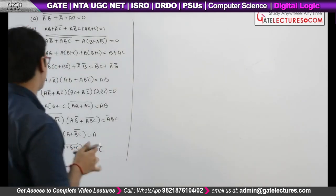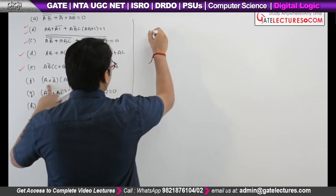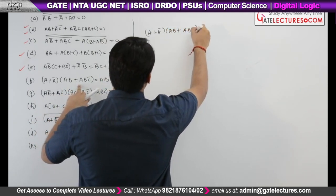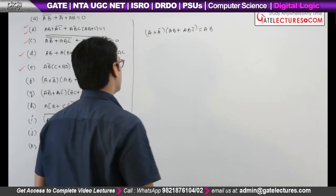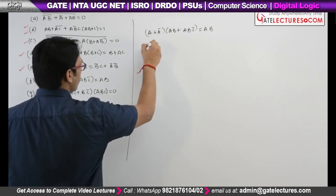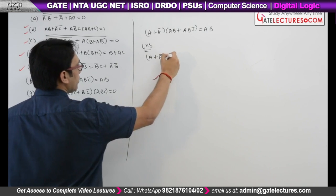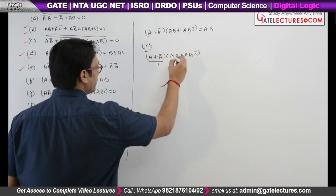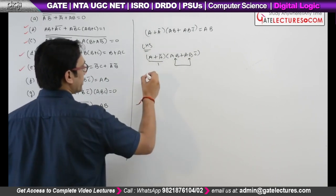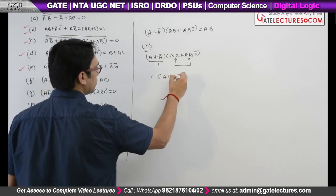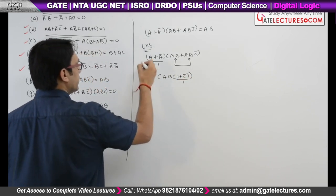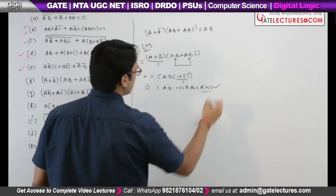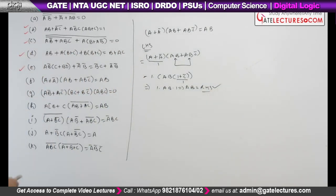The next question says: prove (A + A')(AB + ABC') = AB. Take the left hand side: (A + A')(AB + ABC'). A + A' = 1, and between AB and ABC' we can take AB as common, giving AB(1 + C'). This is 1, so it is 1 · AB · 1 = AB, which equals the right hand side. Hence proved. This is one of the easiest ones.